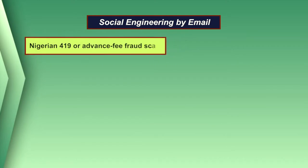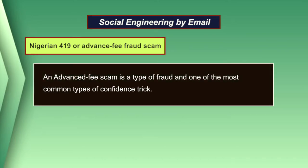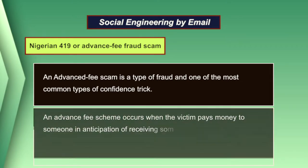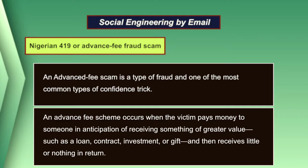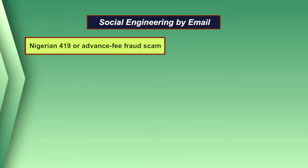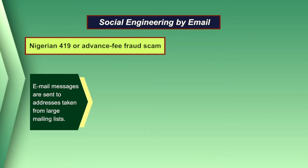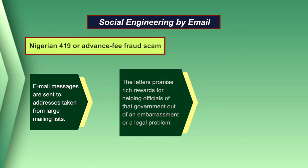The second type of social engineering by email is the Nigerian 419 or advanced fee fraud scam. An advanced fee scam is one of the most common types of confidence trick. The scam typically involves promising the victim a significant share of a large sum of money, which the fraudster requires a small upfront payment to obtain. Email messages are sent to addresses taken from large mailing lists, promising rich rewards for helping officials of a government, bank, or quasi-government agency out of an embarrassment or legal problem.